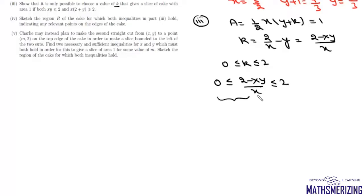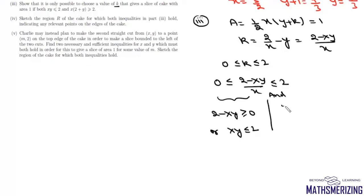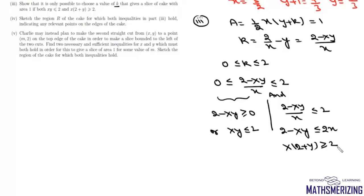Since x is greater than 0, from the left inequality we get 2 − xy ≥ 0, which means xy ≤ 2. From the right inequality, (2 − xy)/x ≤ 2, multiplying through by x (positive) gives 2 − xy ≤ 2x, so x(2 + y) ≥ 2. Therefore, it is only possible to find a valid k if xy ≤ 2 and x(2 + y) ≥ 2.